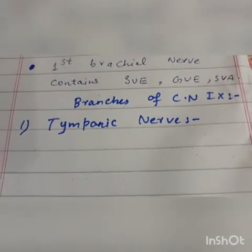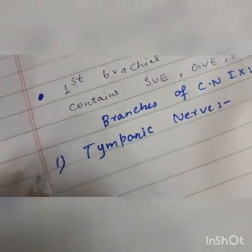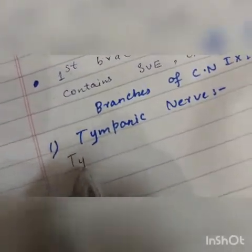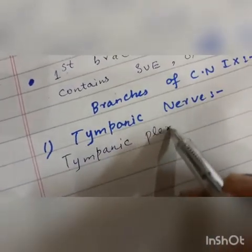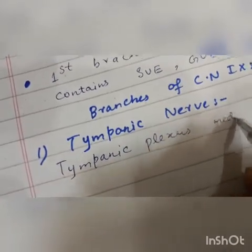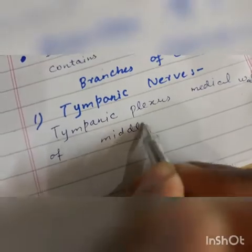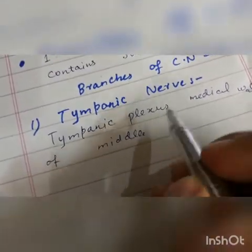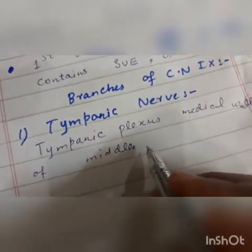The first branch of cranial nerve number nine is the tympanic nerve. The tympanic nerve forms the tympanic plexus, which is located on the medial wall of the middle ear. In the case of the tympanic nerve, we also form another plexus called the carotid plexus, which is formed from the sympathetic nerve.